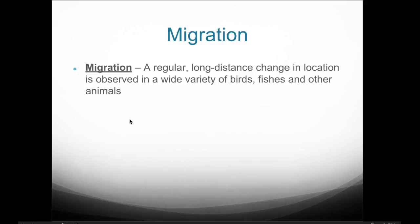Migration is a regular long-distance change in location observed in a wide variety of birds, fishes, and other animals. The book discusses migratory patterns for the starling on page 823. Avian biologists study the migratory patterns of European starlings. You can also talk about the migratory pattern of the monarch butterfly or salmon migrating up rivers from the seas for laying eggs and mating.